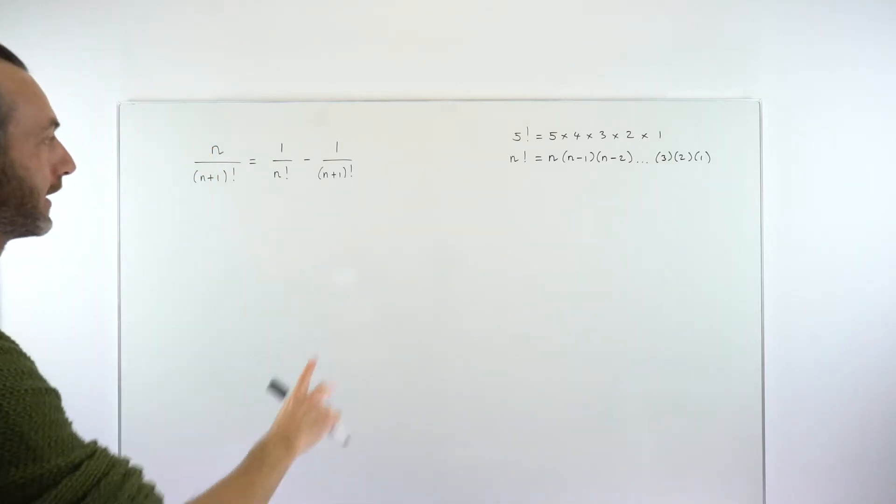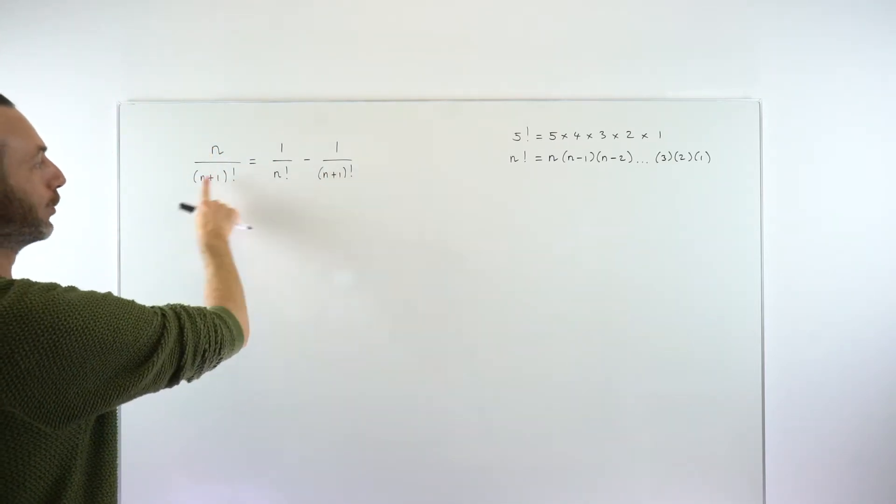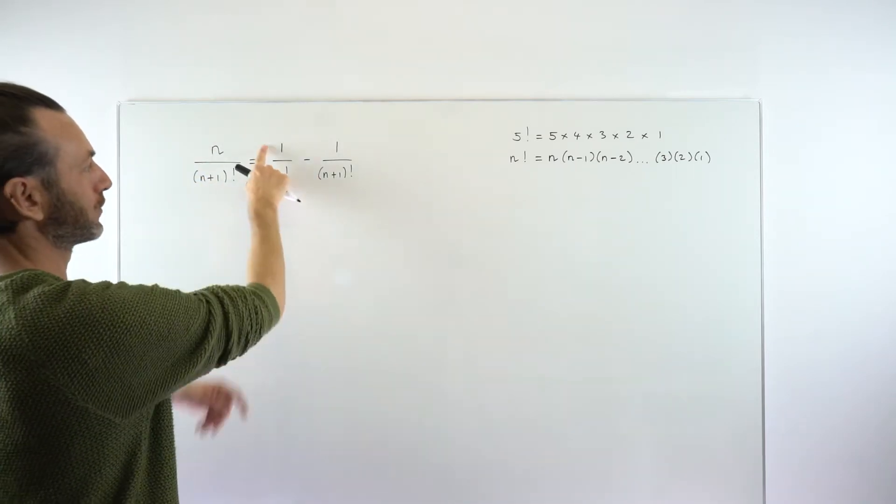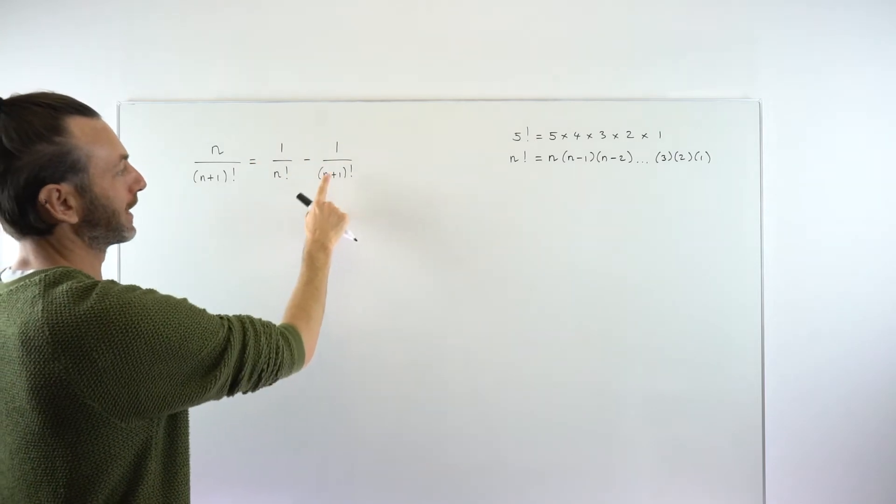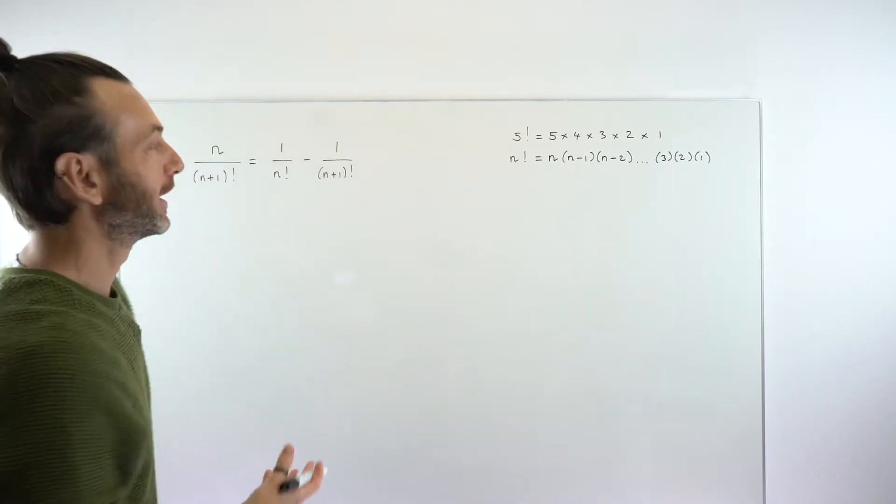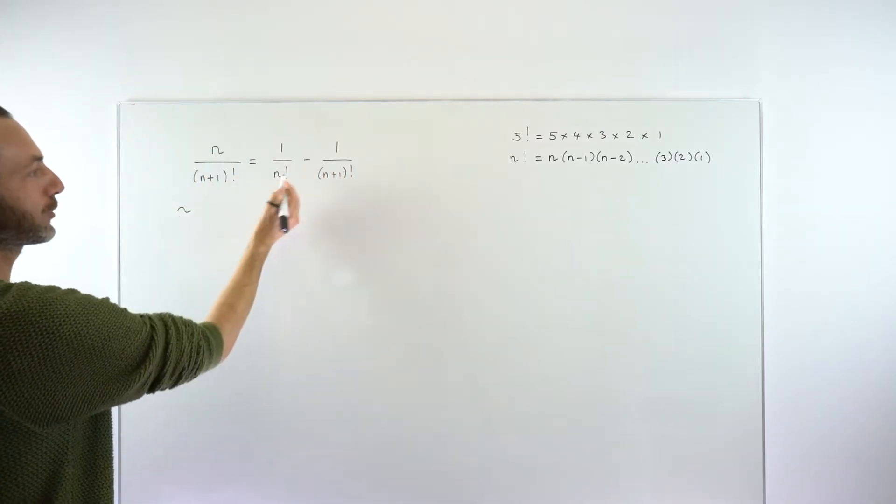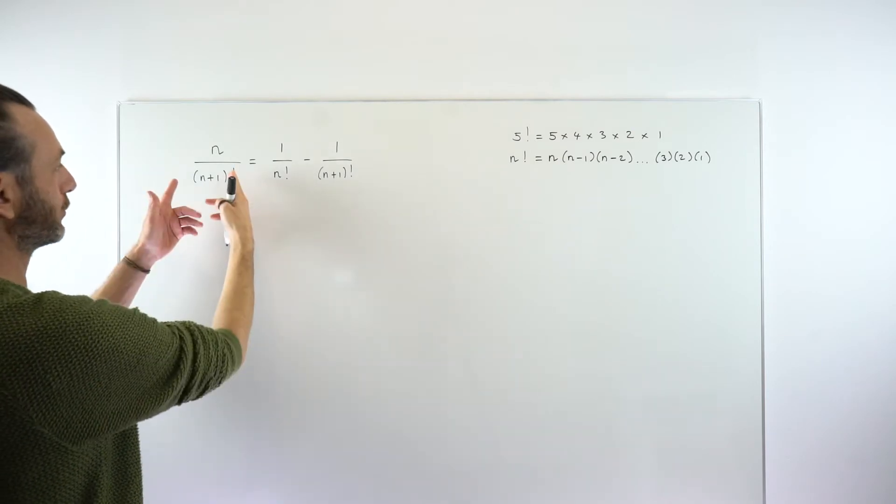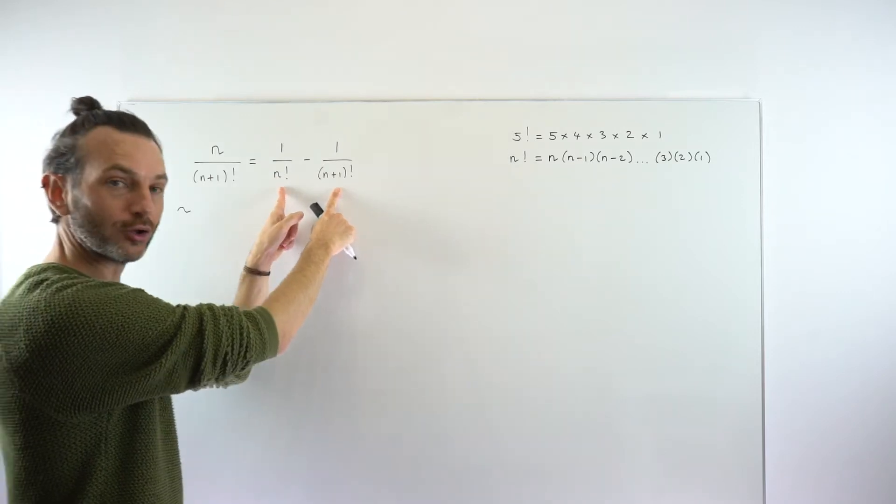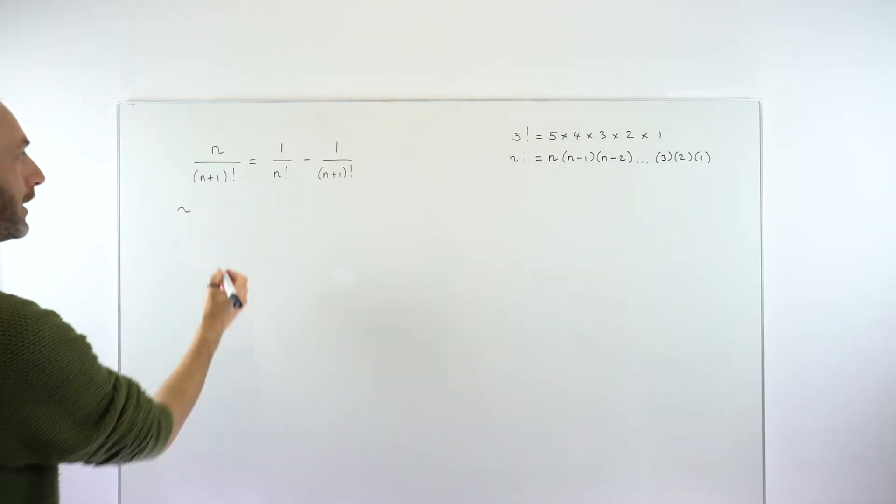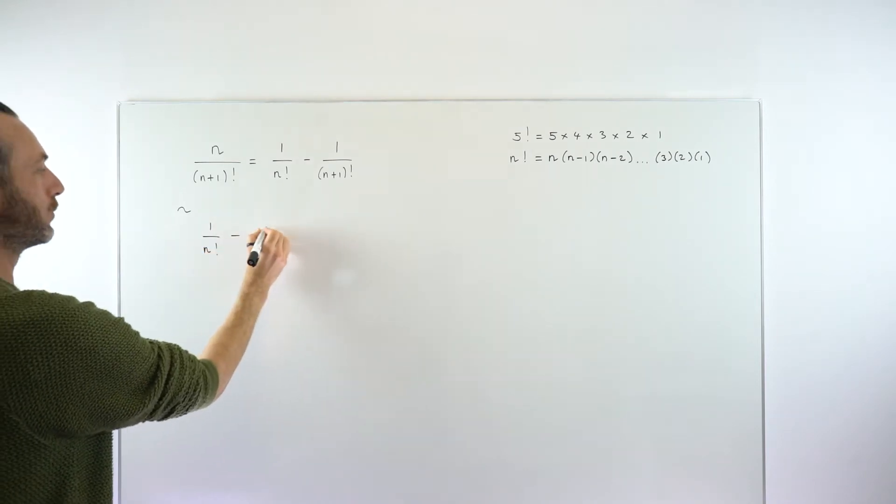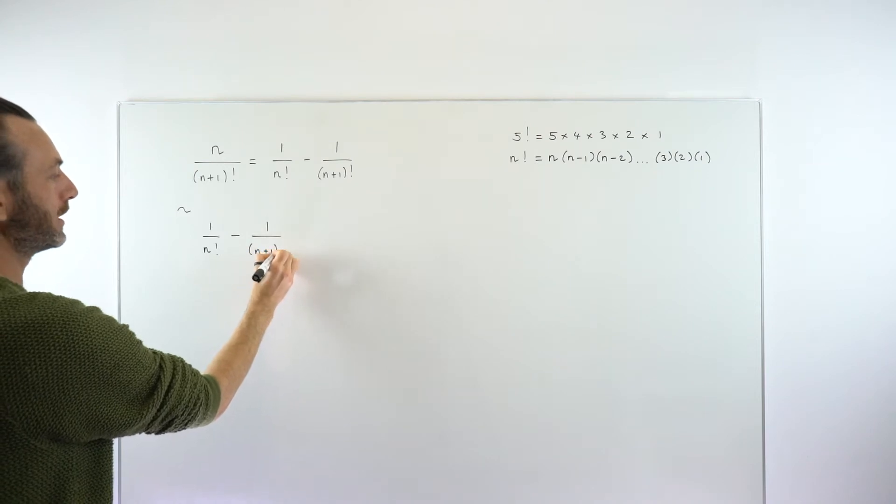So keeping that in mind, let's switch back to our problem. This is the result we want to prove: that n over (n+1) factorial is equal to two fractions, 1 over n factorial minus 1 over (n+1) factorial. Again, it looks very abstract, but it is quite a useful result. Let's have a look at where this actually comes from. We're actually going to start the other way around—we're going to start here and try and prove that these two fractions can be combined into this one fraction. So let's start with 1 over n factorial minus 1 over (n+1) factorial.